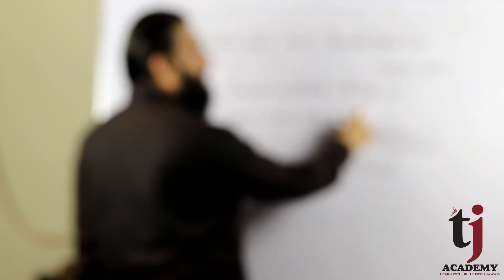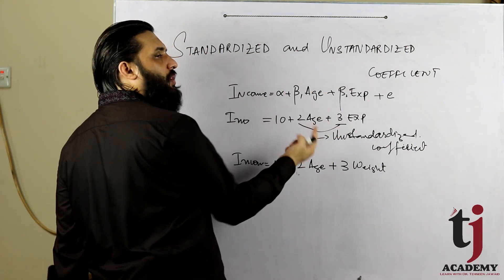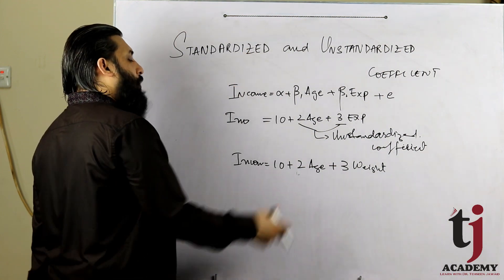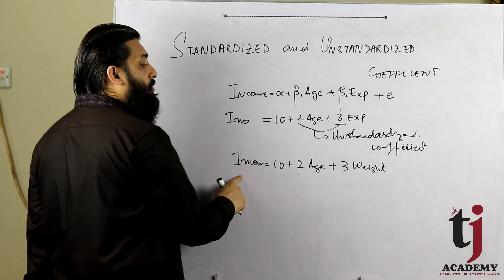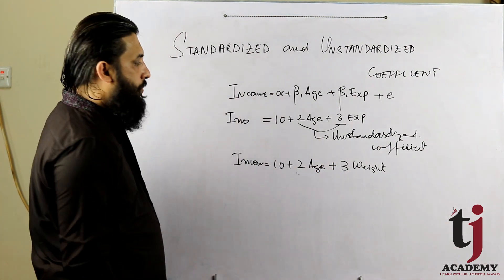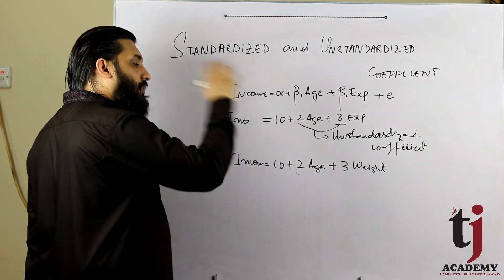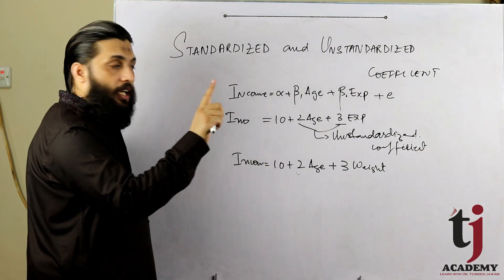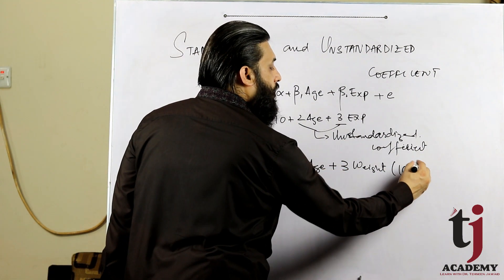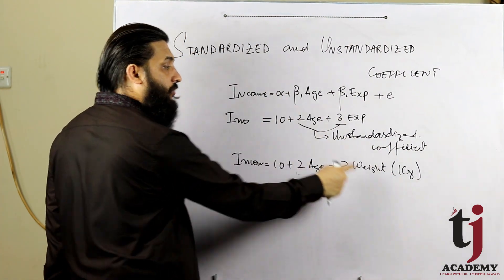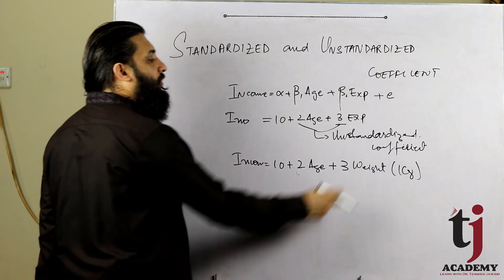Age: if age increases by one unit — one year — then income increases by two units.